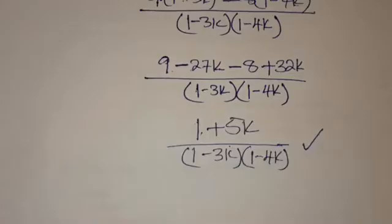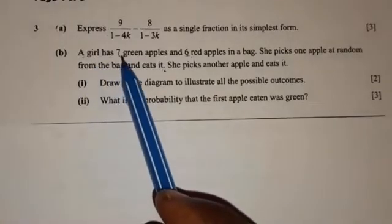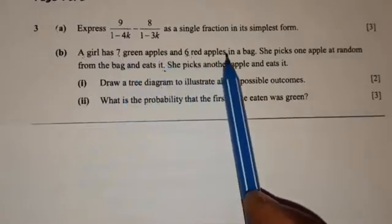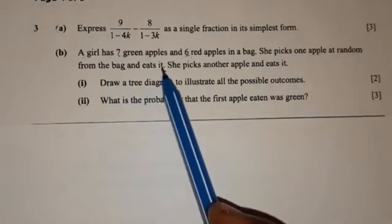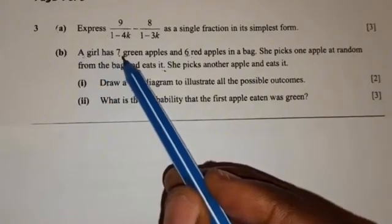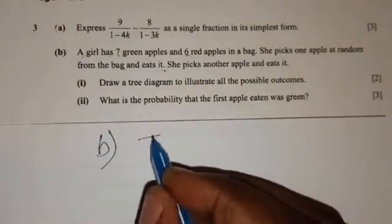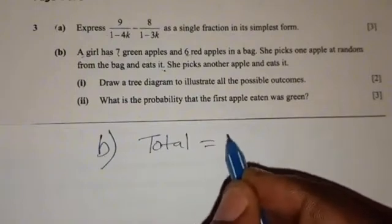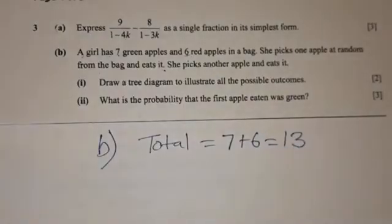If you are with me up to this point, kindly subscribe, hit the like button, comment, and share. Part B of Question 3 says: a girl has 7 green apples and 6 red apples in a bag. She picks one apple at random and eats it, then picks another apple and eats it. The total number of apples is 7 plus 6, which equals 13 total outcomes.